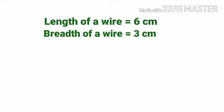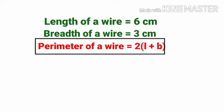So length of wire equals 6 cm, breadth of wire equals 3 cm. Now let's apply the formula. Perimeter of a wire equals 2 into l plus b, equals 2 into 6 plus 3. Applying the formula with the given units, 6 plus 3 equals 9.